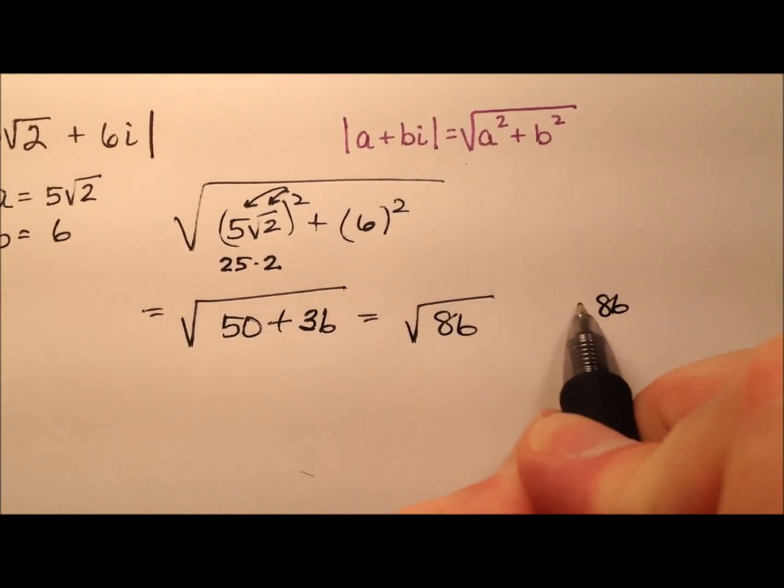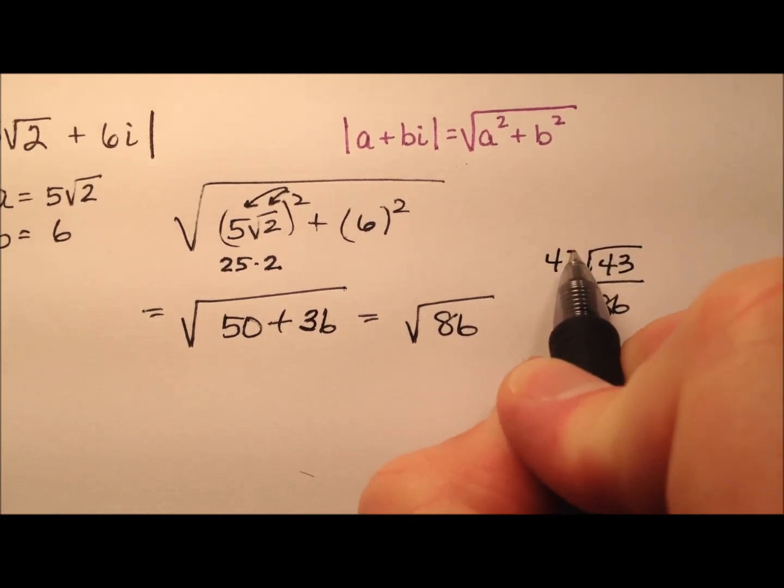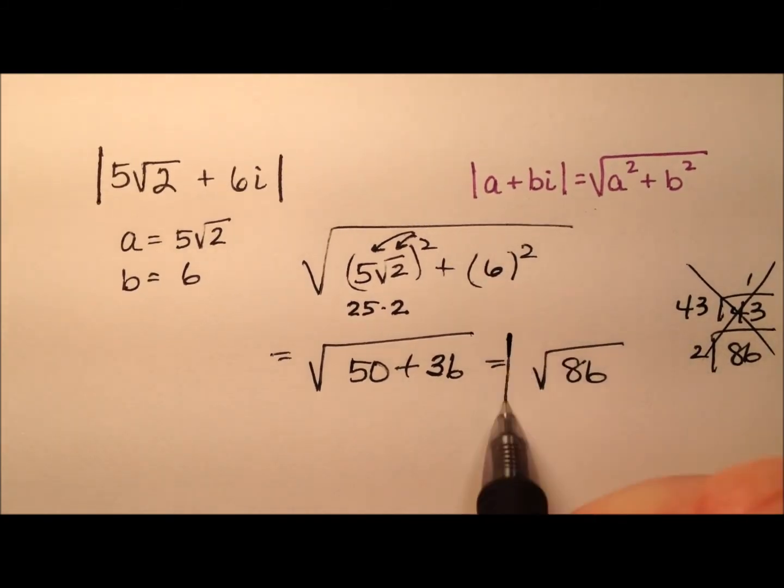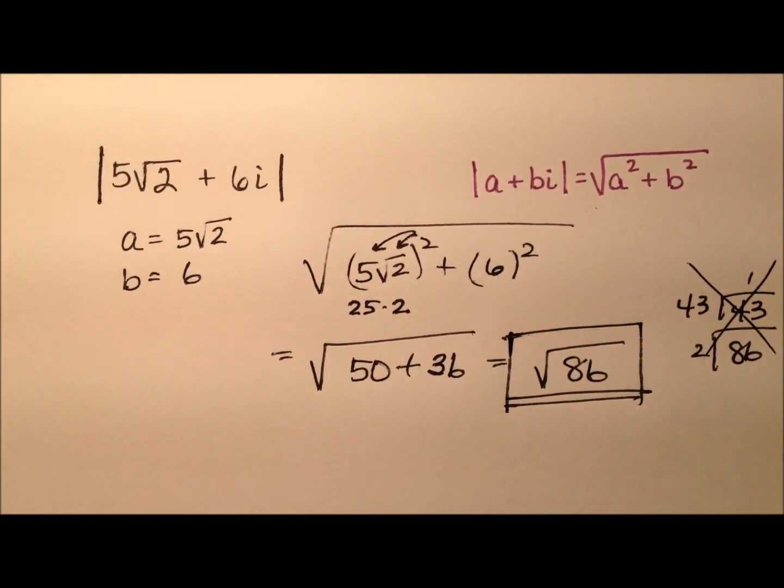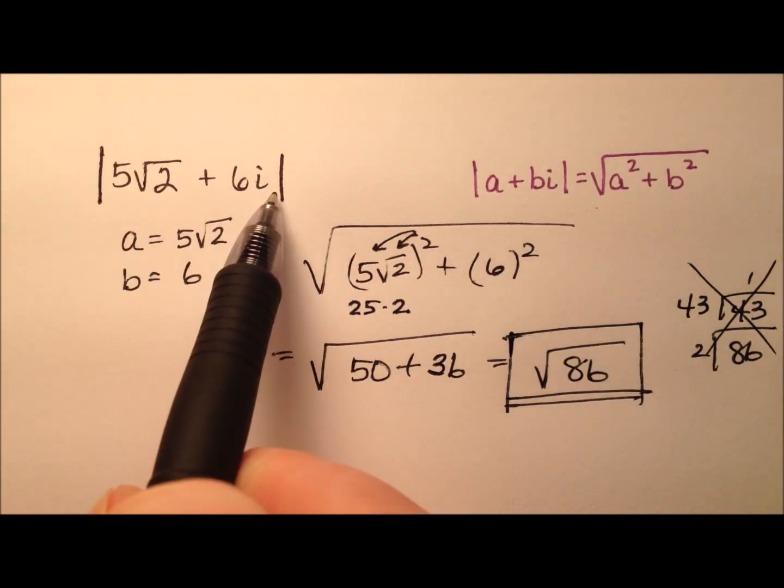Well, can the square root of 86 reduce down? Well, I can take a 2 out, but then it's 2 times 43. So we know that I cannot reduce this square root. So the square root of 86 is the modulus, or the absolute value, of this complex number, 5 radical 2 plus 6i.